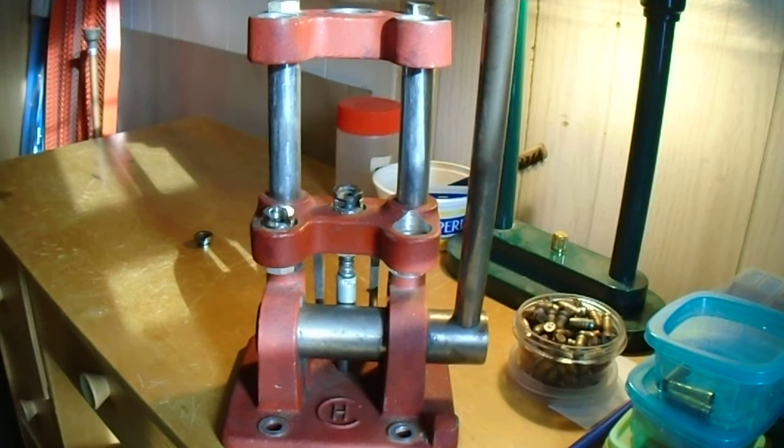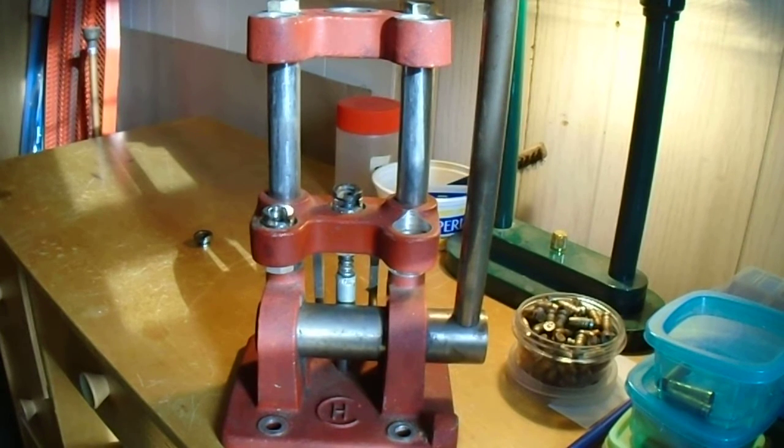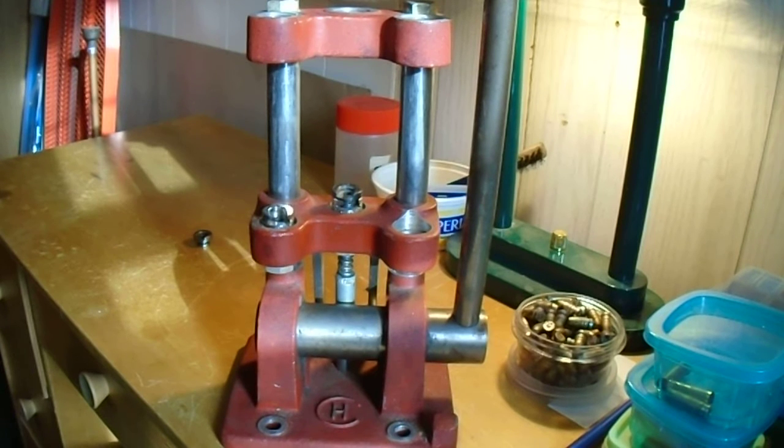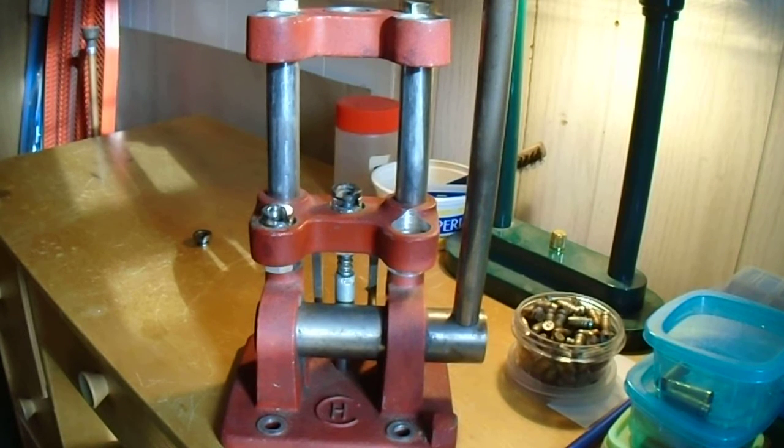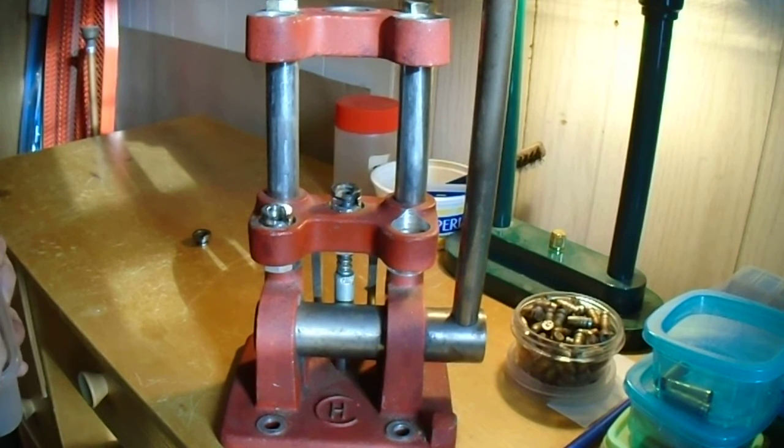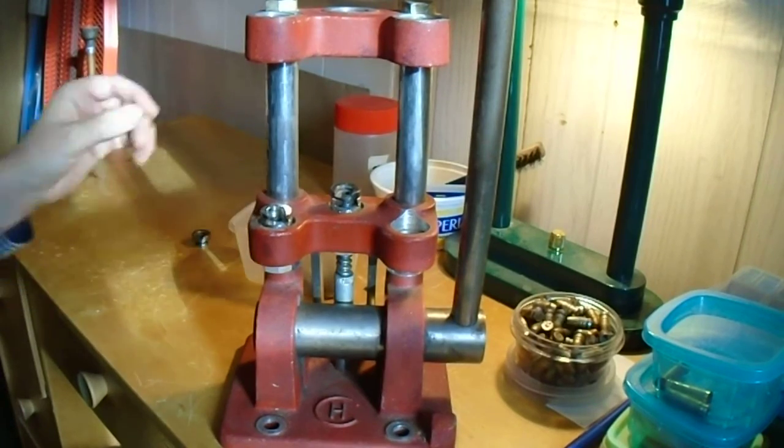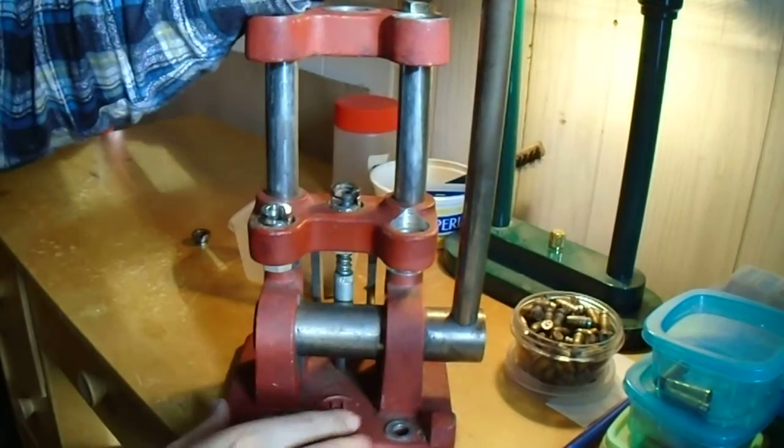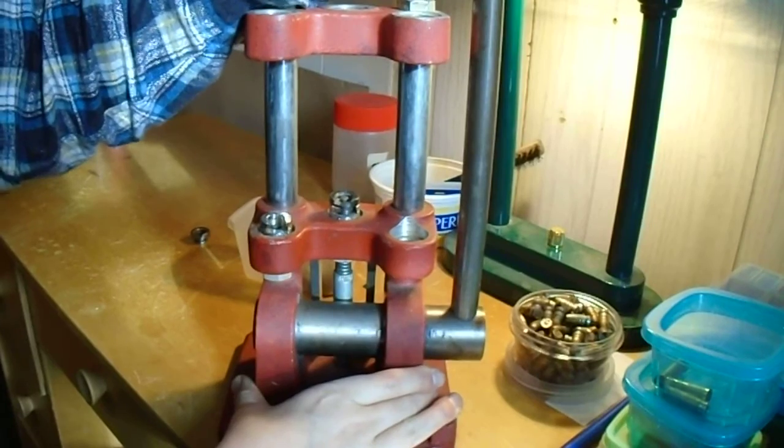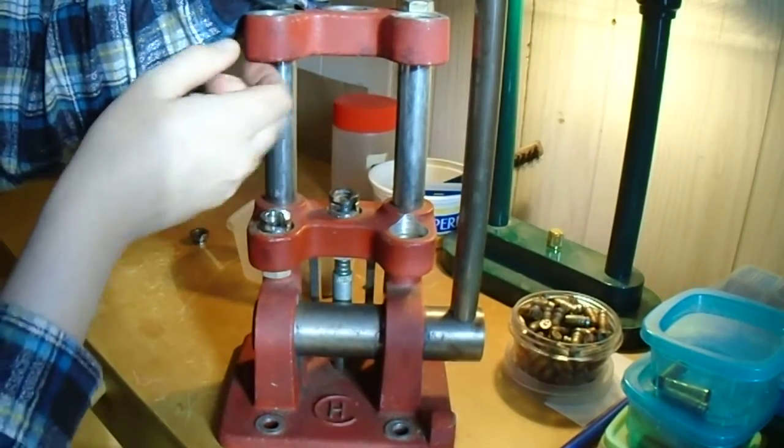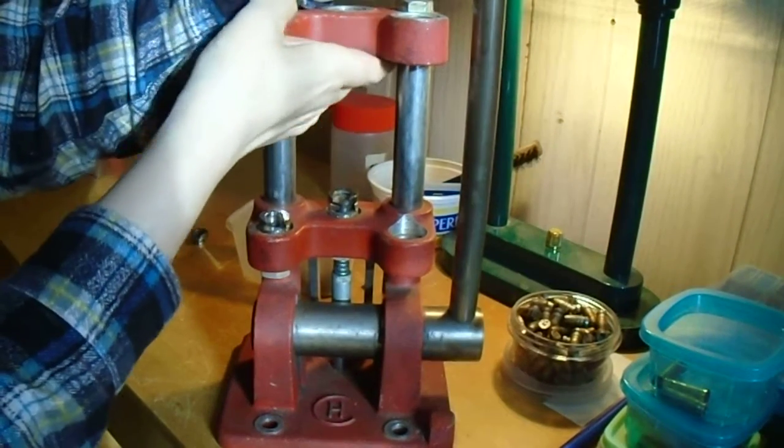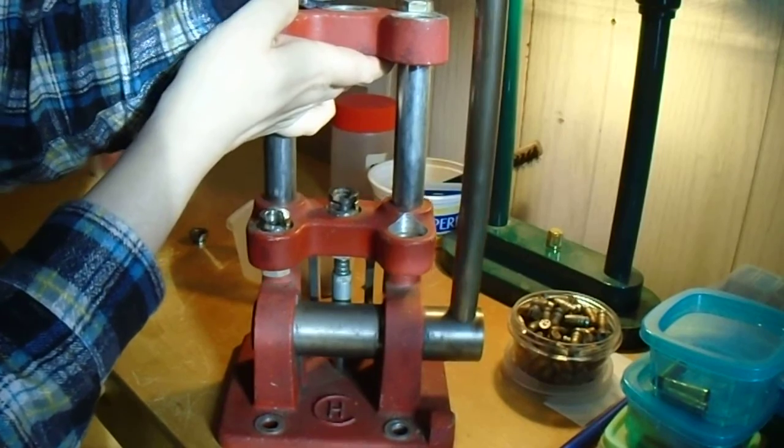So I think number one is probably like 308, 3006 kind of deal, and I don't know what this one is. So you put your shell holder in, then you can push your thing, and the priming thing will come up, you can see. Which comes up through.